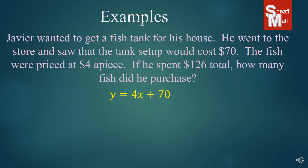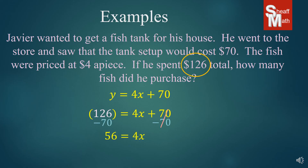If he spent $126 total, how many fish did he buy? The total price was $126, so we put that in for y and solve for x. We subtract $70 from both sides, giving us $56 equals 4x. Divide by 4, giving us x equals 14. So the answer is 14 fish is what he purchased.